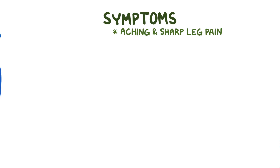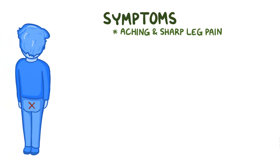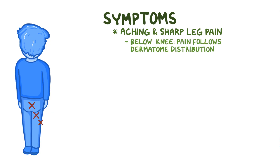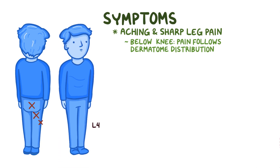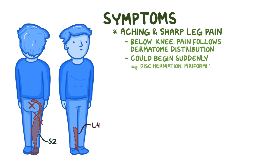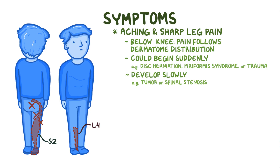In sciatica, the main symptom is aching and sharp leg pain. It radiates along the middle or lower buttock, and on the back or the outer side of the thigh. Below the knee, the pain usually follows the dermatome distribution. For example, if the L4 nerve root is compressed, the pain would radiate alongside the medial side of the leg. If the S2 nerve root is compressed, the pain would mostly be felt along the back of the leg. This pain could begin suddenly, usually with disc herniation, piriformis syndrome, or trauma. It could also develop slowly, like if caused by a tumor or spinal stenosis, where the pain increases over time.